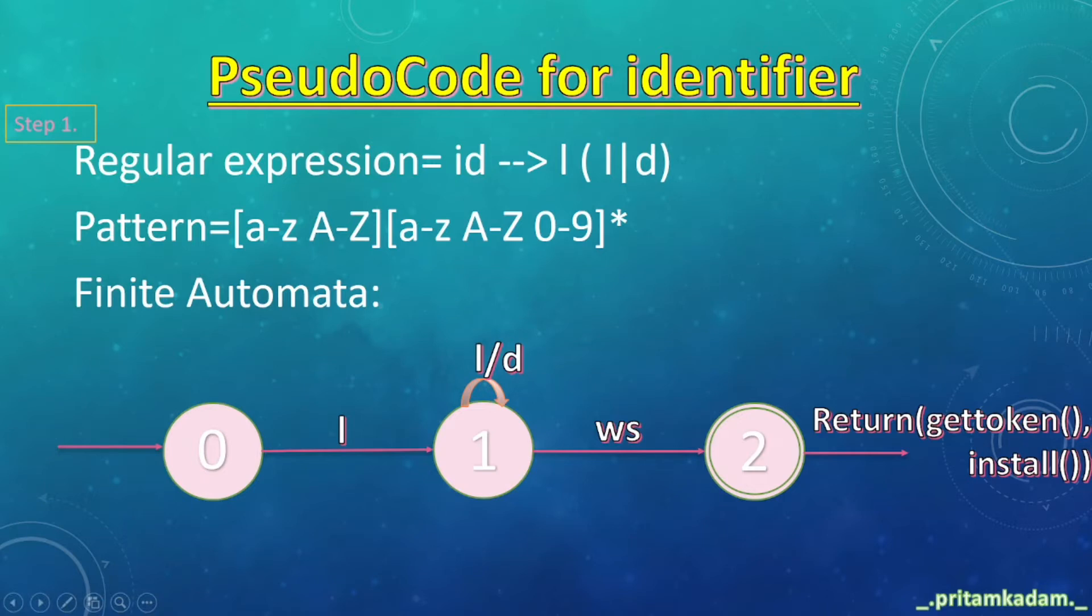We have to form finite automata. At state 0, it will only proceed if i is given to it, and in state 1 it will be in recursion with i or d. And ws and return get token install is by default over there in the final state of the finite automata.